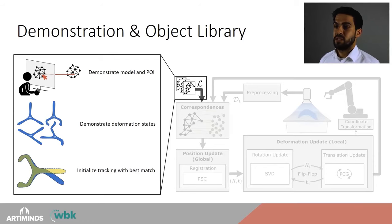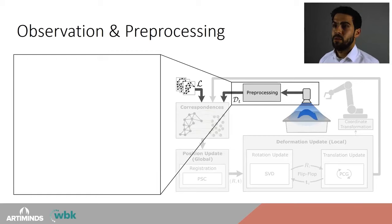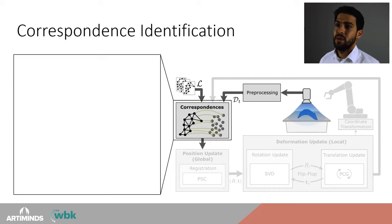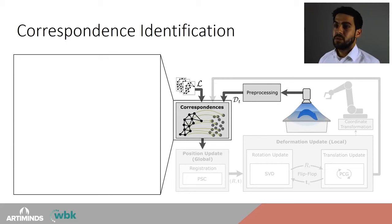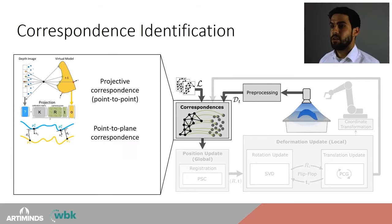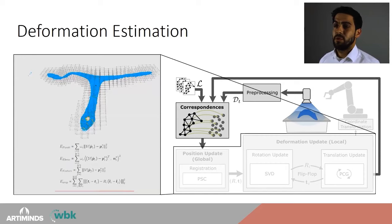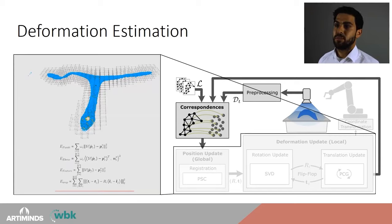For every iteration of the tracking pipeline, we pre-process a point cloud from the 3D camera by removing outliers and segmenting the object from the environment. We then identify correspondences between the deformed virtual model and the current observation, using projective correspondences, point-to-plane correspondences, and feature matching with a SHOT descriptor. Knowing these correspondences defines a non-linear optimization problem which tries to minimize the distance between the found correspondences.